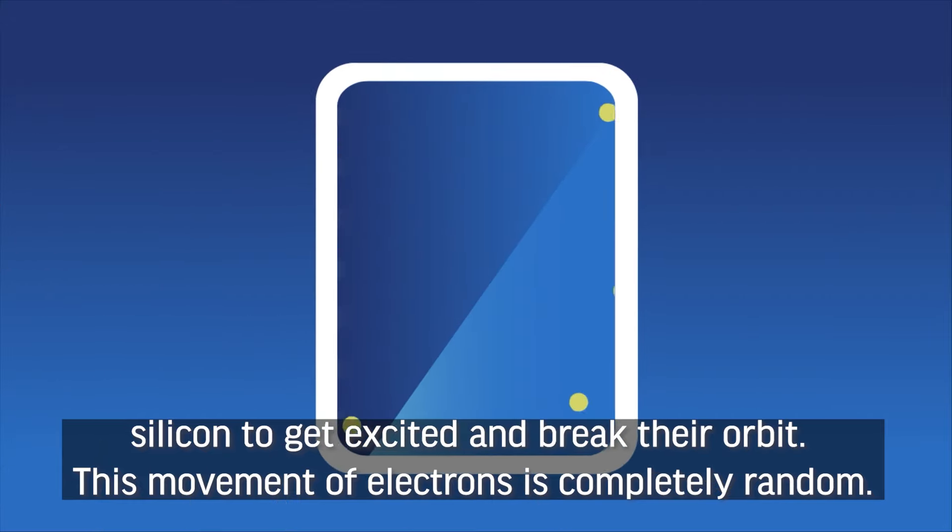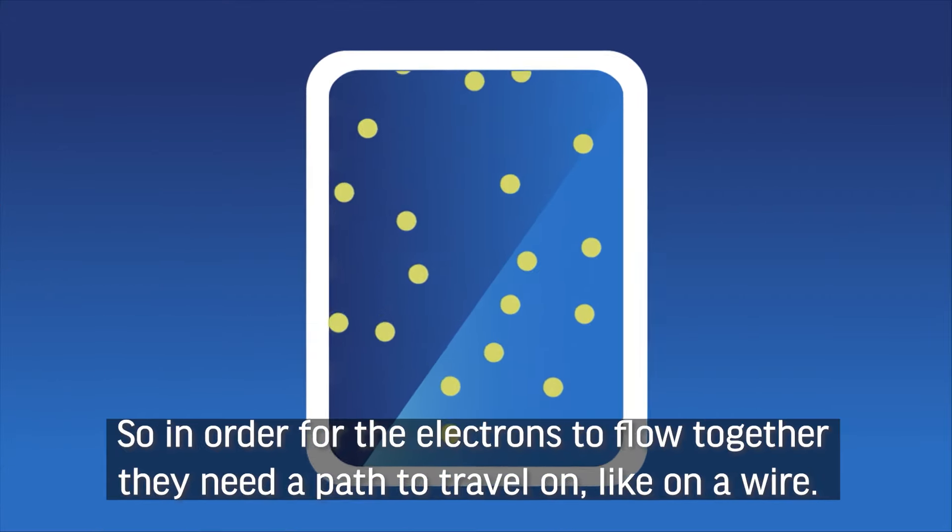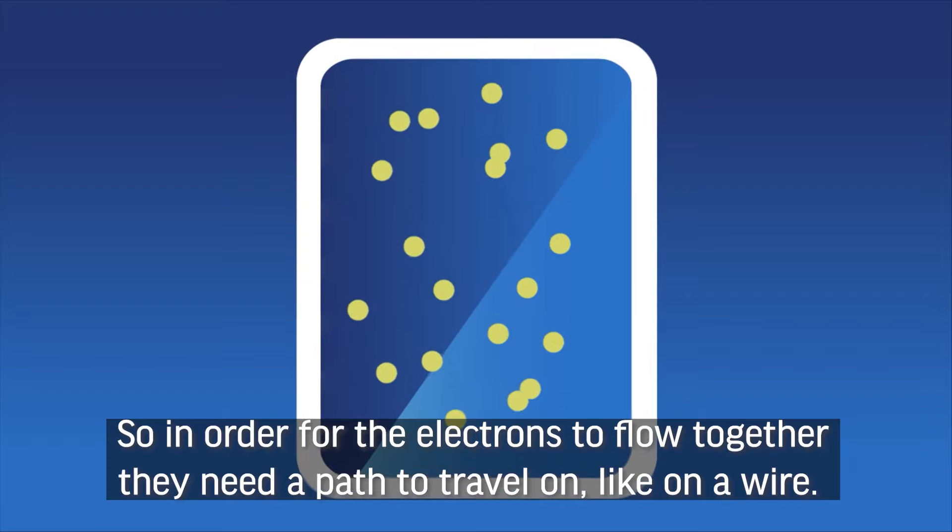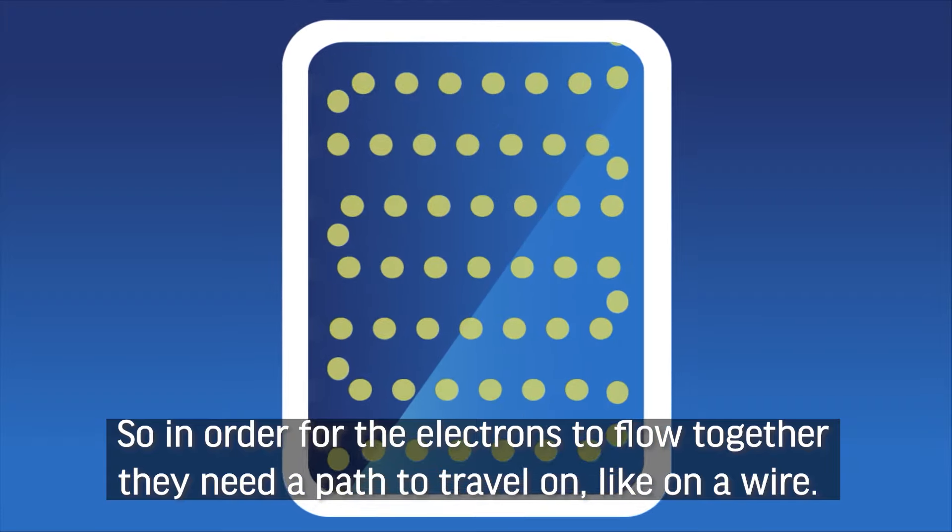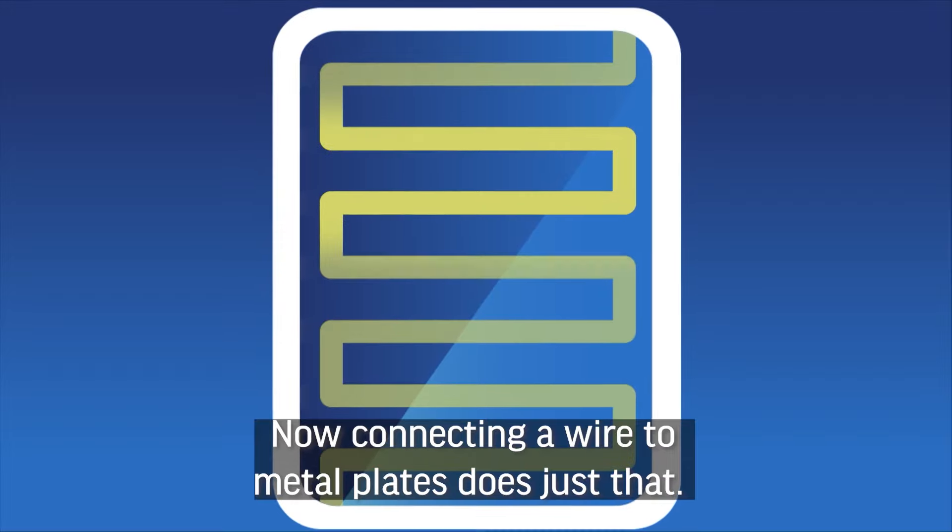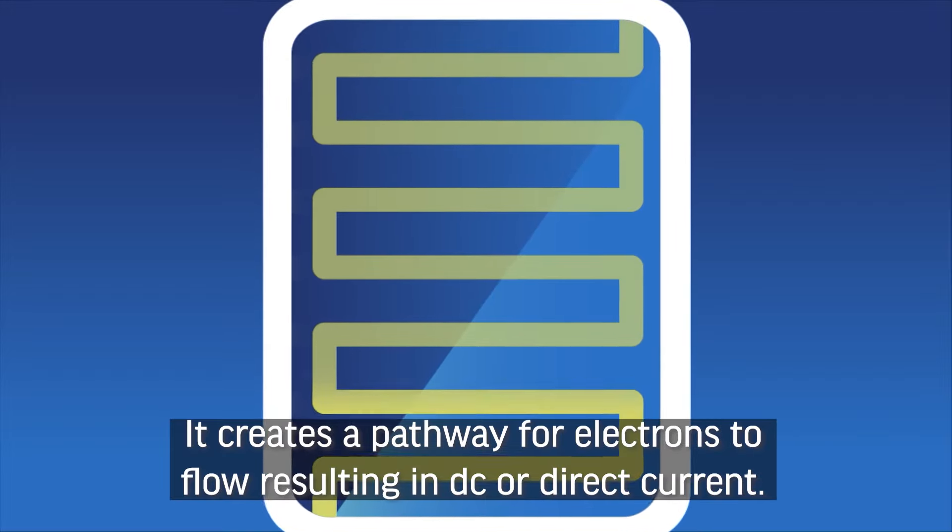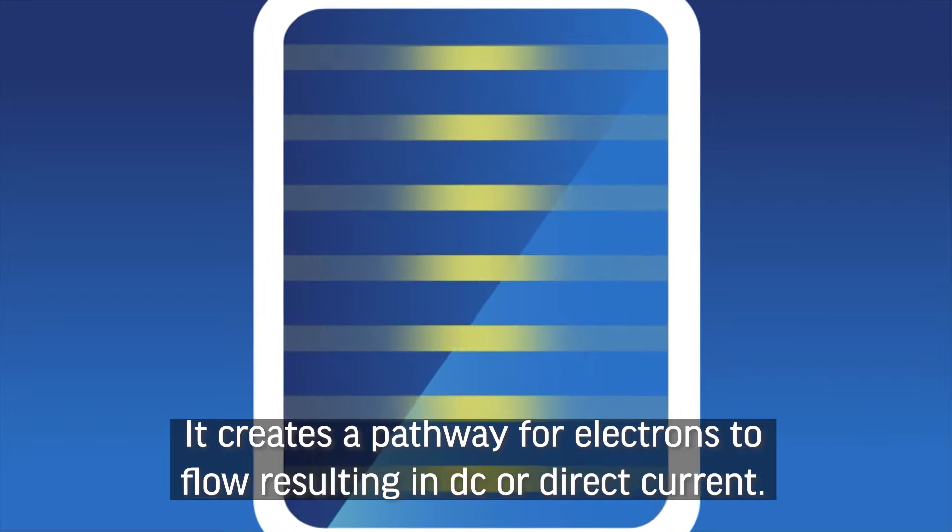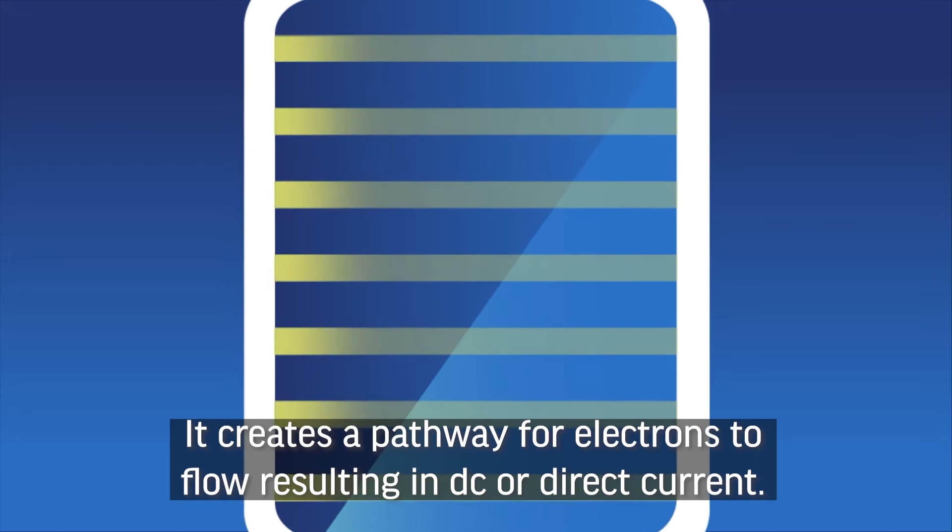This movement of electrons is completely random. So in order for the electrons to flow together, they need a path to travel on, like on a wire. Connecting a wire to metal plates does just that. It creates a pathway for the electrons to flow, resulting in DC, or direct current.